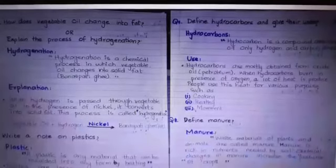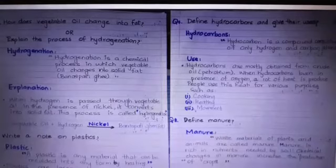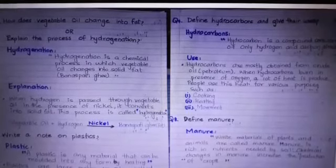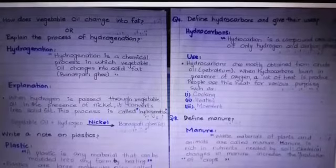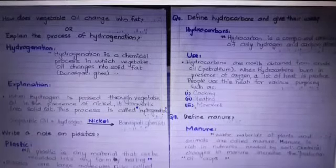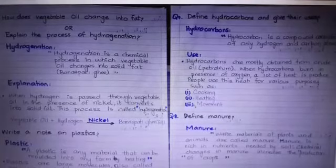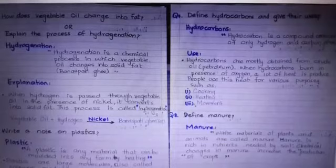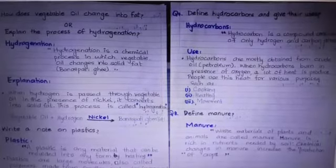Now the question answers. Question: How does vegetable oil change into fat, or explain the process of hydrogenation? Answer: Hydrogenation is a chemical process in which vegetable oil changes into solid fat. This process is called hydrogenation. Vegetable oil plus hydrogen in the presence of nickel will form banaspati ghee.